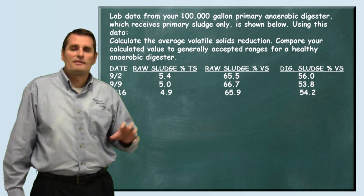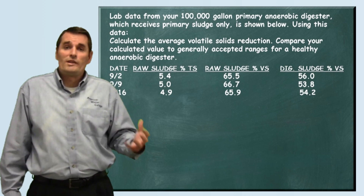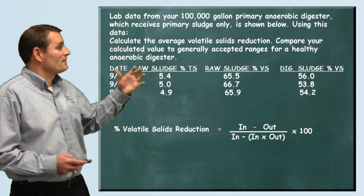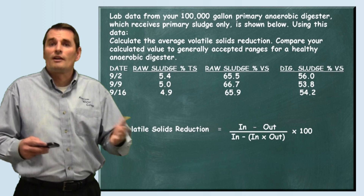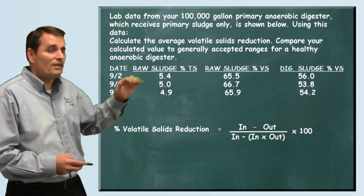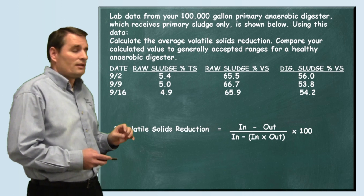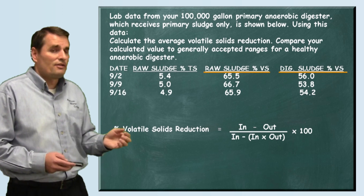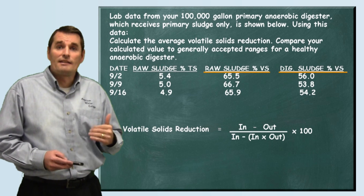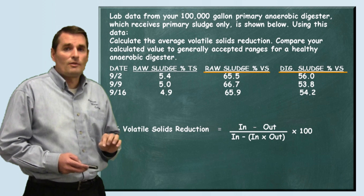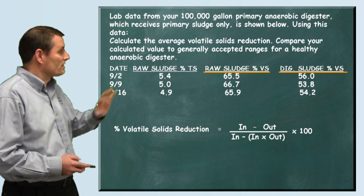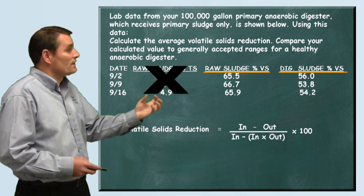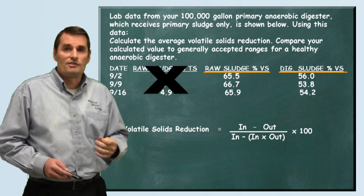We have a bunch of numbers and some different dates, so the first order of business is to determine which numbers we want to use. When we're dealing with percent volatile solids reduction, we use the formula that has us take our percent volatile solids in minus our percent volatile solids out, using both in the denominator as well. They gave us our raw sludge percent volatile solids and our digested sludge percent volatile solids — those are the two columns we'll use. The raw sludge percent total solids is not used for this problem, so we cross that out. The raw sludge percent volatile solids is the 'in' value, and the digested sludge percent volatile solids is the 'out' value.